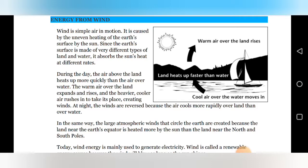So during the day, the air above the land heats up more quickly than the air over the water. That means water has the cool property than the air or earth. That's why it flows more cool on the water than the earth surface. The warm air over the land expands and rises and the heavier cooler air rushes in to take the place creating winds. So at night, the winds are reversed because the air cools more rapidly over land than the water.